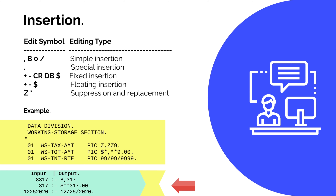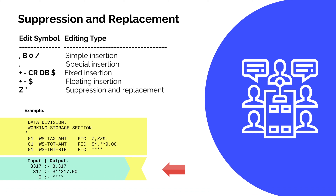For replacing or suppressing a specific value on screen or on a report, you can use the editable data type Z or asterisk. In the example WS-INT-RTE, the picture clause uses asterisks, and when a value of zero is passed, it is suppressed and asterisks appear in the output. Similarly, you can use Z to suppress certain values. These edit picture clauses are used for reporting or formatting data displayed on screen.